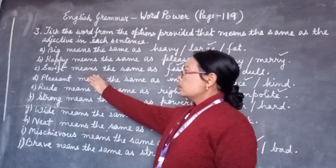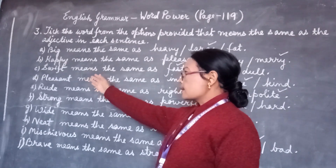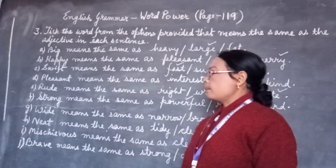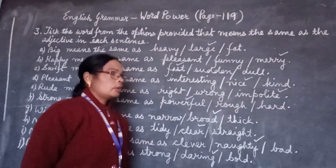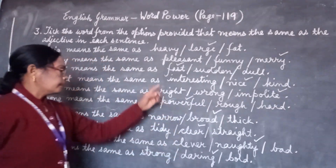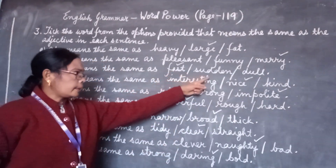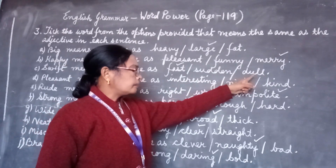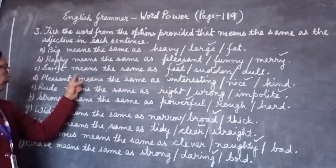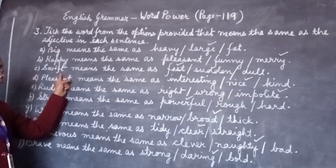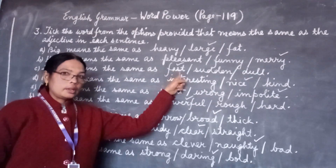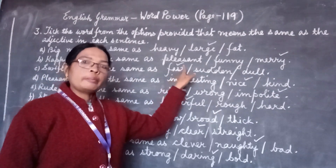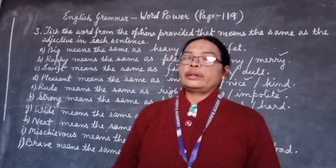Now come to number C. 'Swift' means the same as — the options are fast, sudden, and dull. The meaning of swift is fast. That's why we will put a tick mark on that word, fast.